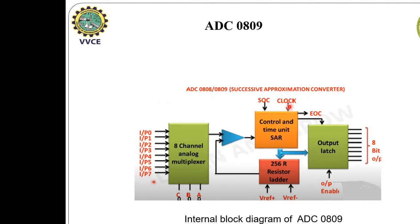The two inputs for this A-to-D converter are SOC, that is start of conversion, and clock. At the output, we have two more signals: one is the end of conversion, which indicates that the analog is converted into digital. The output is latched using a latch, and this is an 8-bit output.